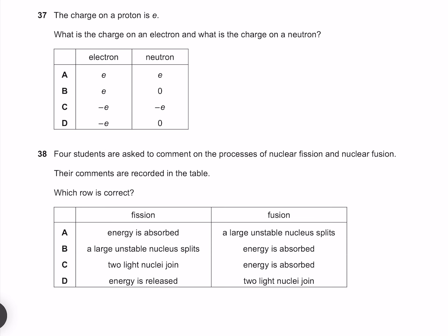The charge on a proton is E. What is the charge on an electron and what is the charge on a neutron? An electron is negative the charge of a proton, and the charge on a neutron is zero. So our answer must be D.